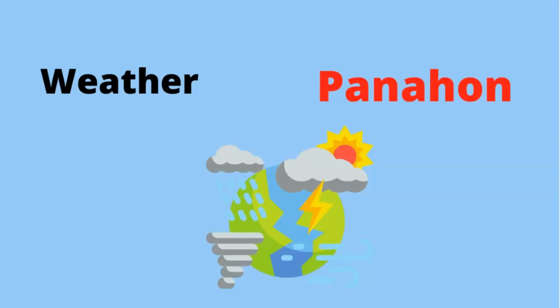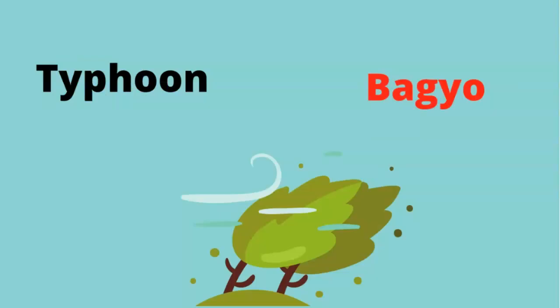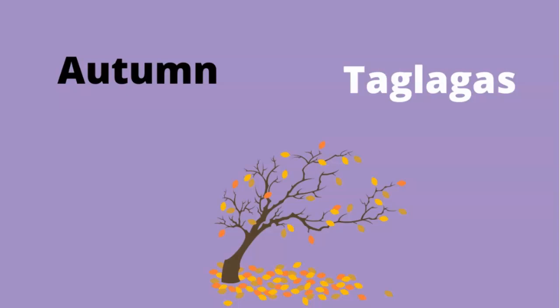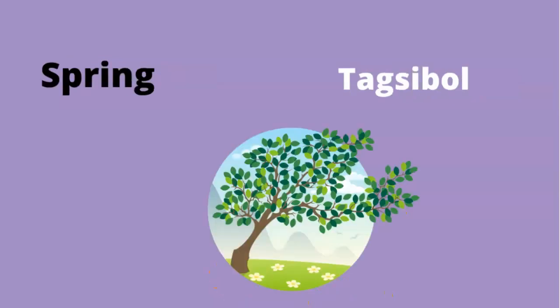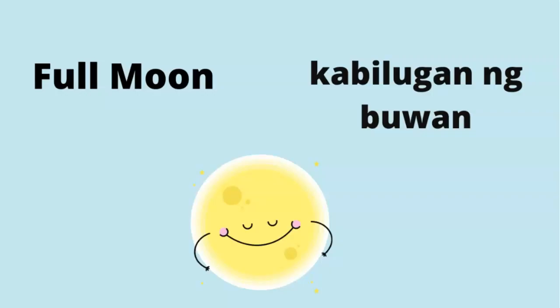Wet — Basa. Typhoon — Bagyo. Autumn — Taglagas. Spring — Tagsibol. Summer — Tag-araw. Full moon — Kabilugan ng buwan.